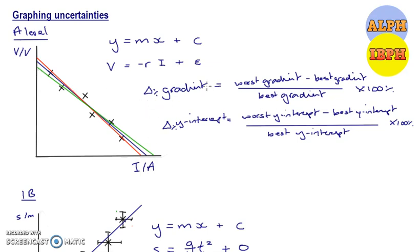And always be careful that when you're working with gradients, you're probably going to have a unit. So in this case, our unit is ohms for the gradient. And for our y-intercept, your unit is the same as the values on your y-axis. So that is units of potential difference, that's volts. So that's graphing uncertainties for the A-level.